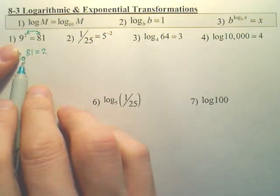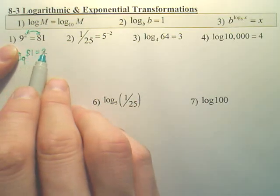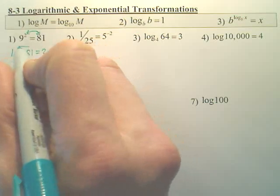If you cover this up, you have 9 squared equals 81. I switch the 2 and the 81 and put a log in front. That's my answer.